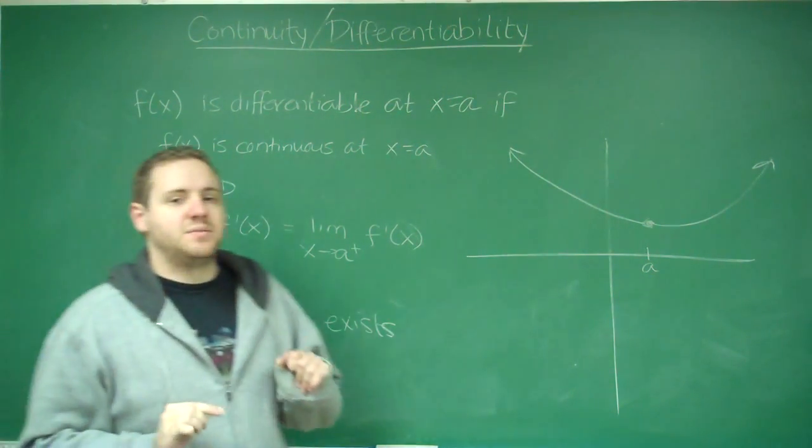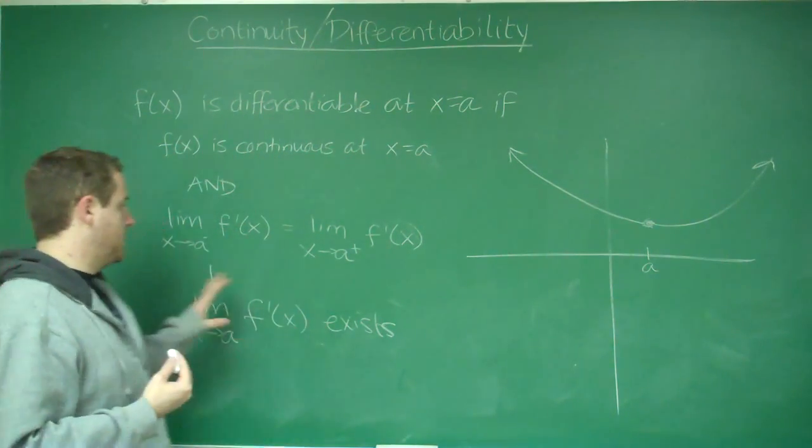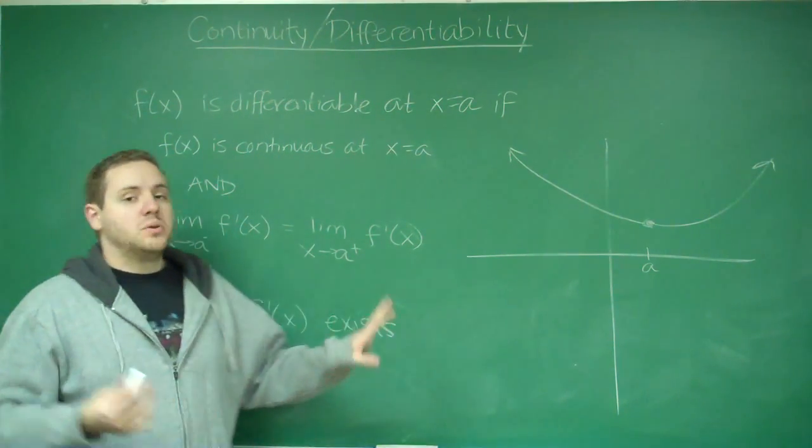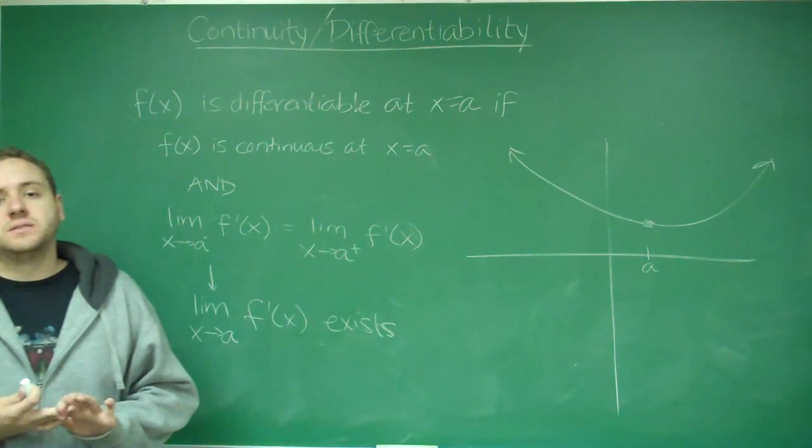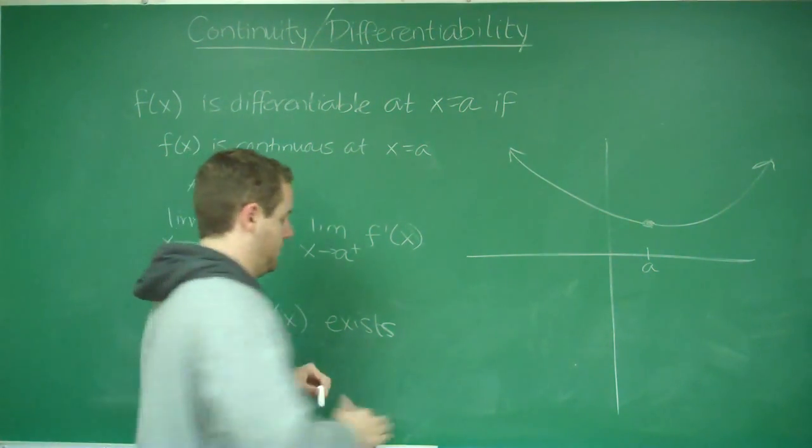So not only does it have to be continuous, but the slopes, essentially, have to approach the same value from the left and the right. So let's look at a function that's continuous, but not differentiable.